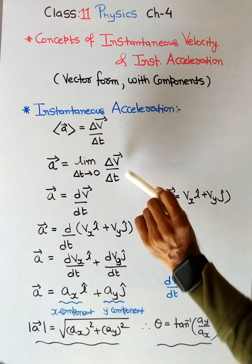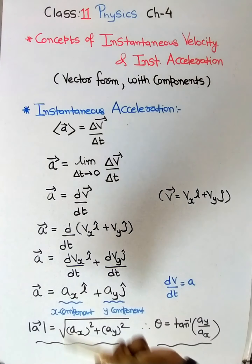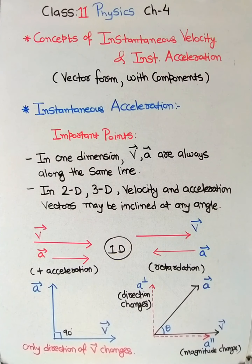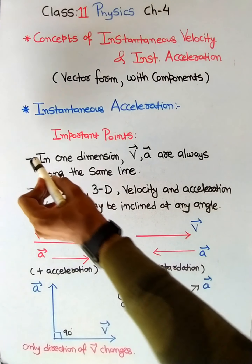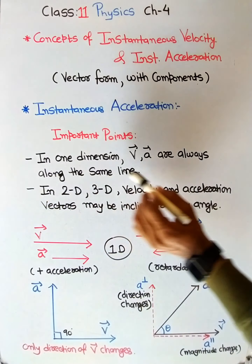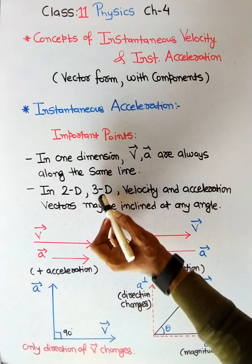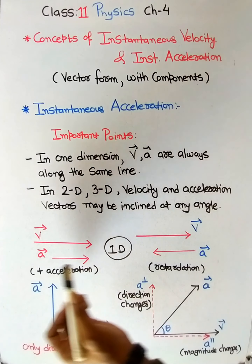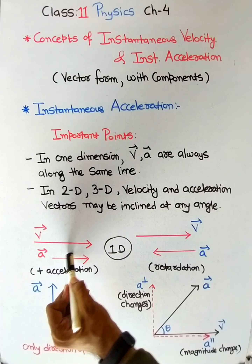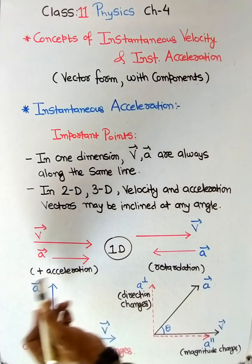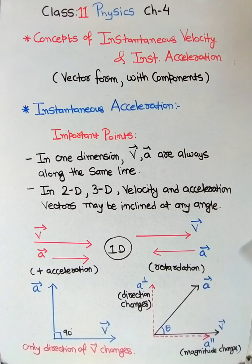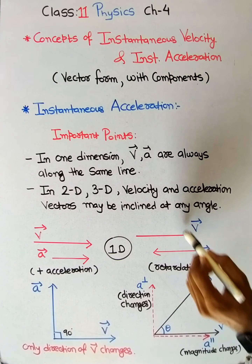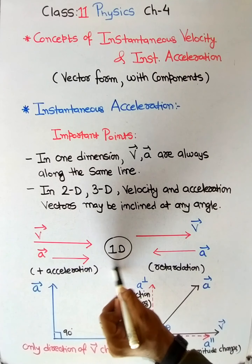Remember, we cannot directly obtain instantaneous acceleration — we must start with change in velocity, convert into velocity components, split them, and then change into acceleration components. An important point: in one dimension, velocity and acceleration are always along the same line. In two and three dimensions, velocity and acceleration vectors may be inclined at any angle from 0° to 180°. In one dimension, if velocity and acceleration are in the same direction, the acceleration increases the magnitude of velocity; if opposite, it is retardation and the magnitude of velocity decreases.